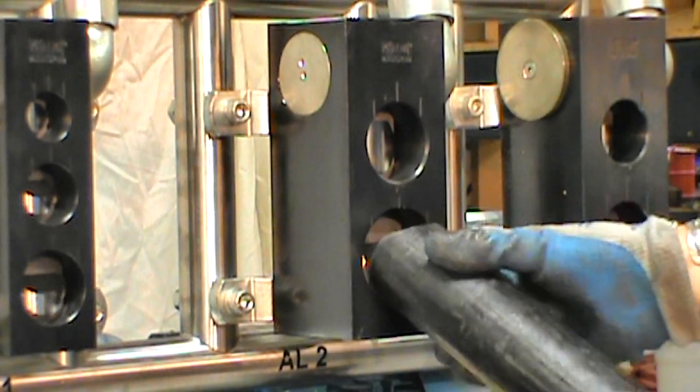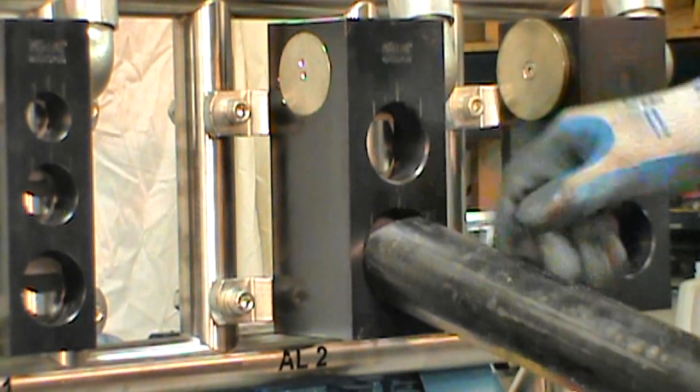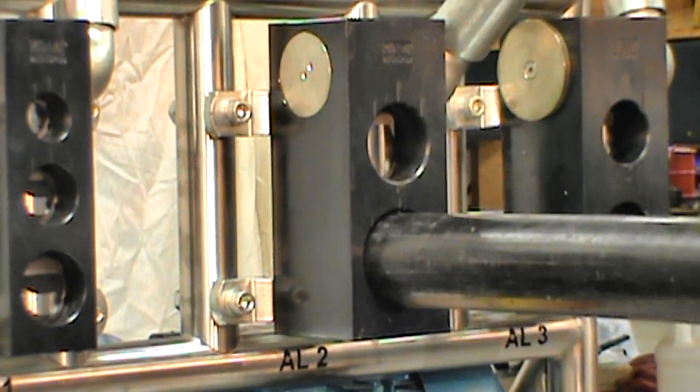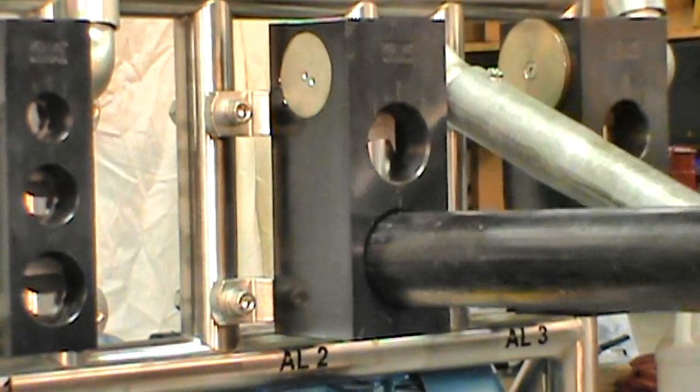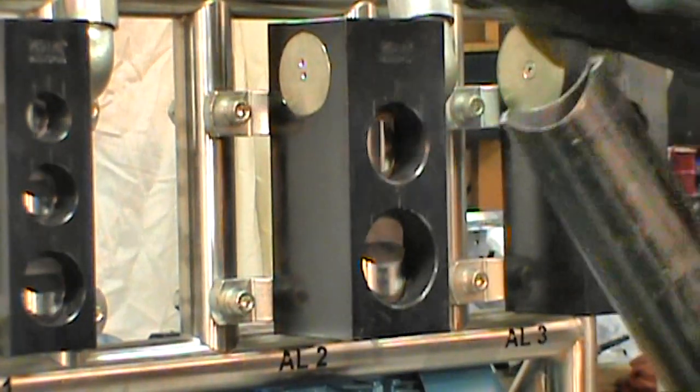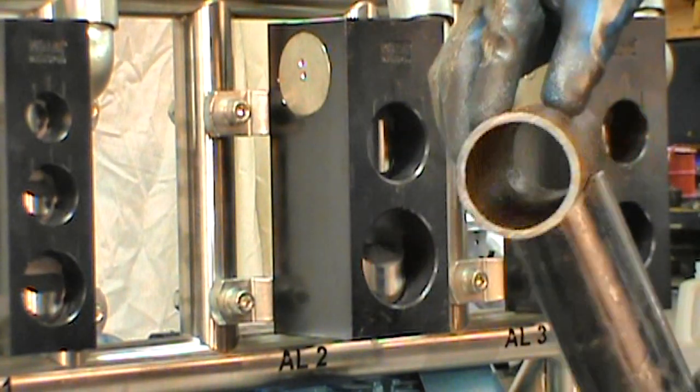Pull the pipe out, rotate and line up the points to the lines on the tool. Slide the pipe all the way in, notch it, saddle it, and then weld it.